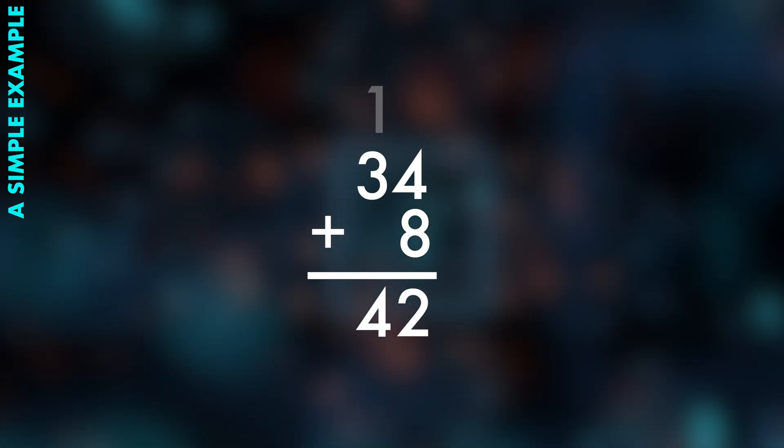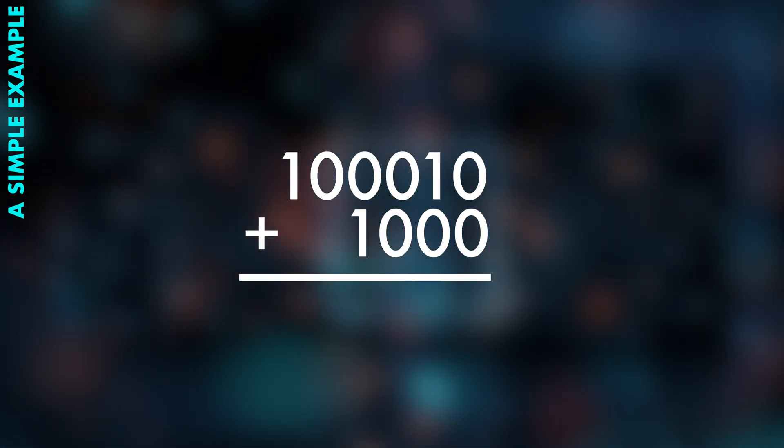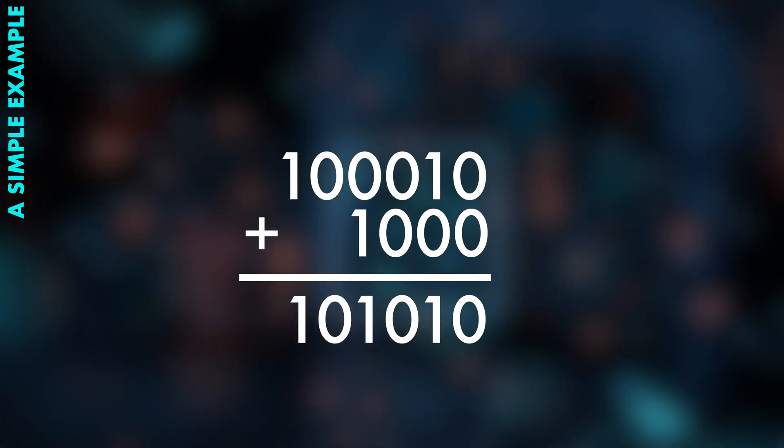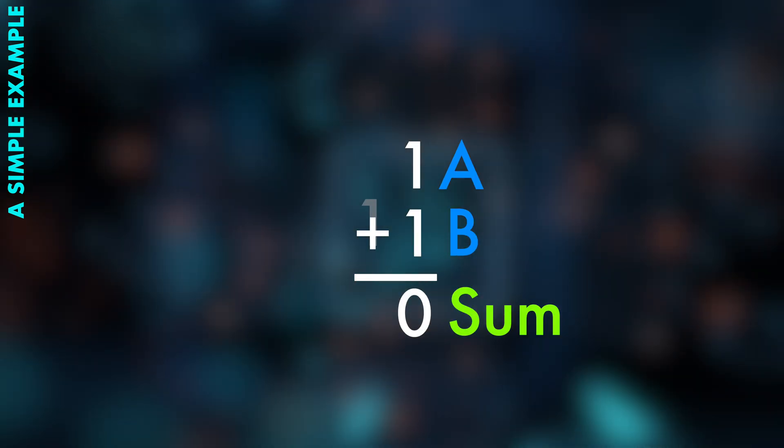I've used the base 10 numbers here because that's what we are used to, but computers can do the exact same thing with binary numbers. All we need to do is add up two numbers A and B and also handle the carry correctly.